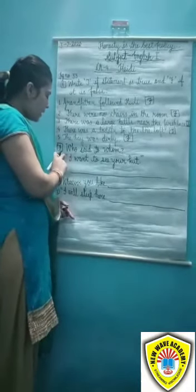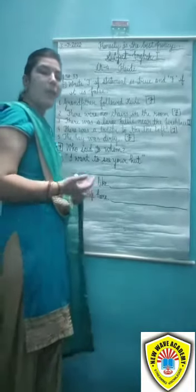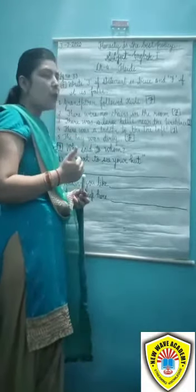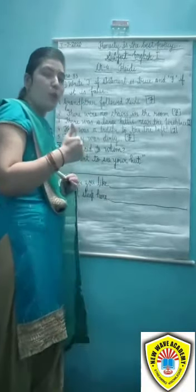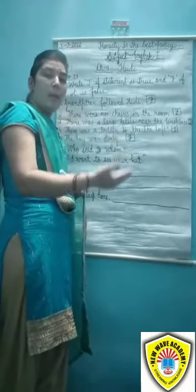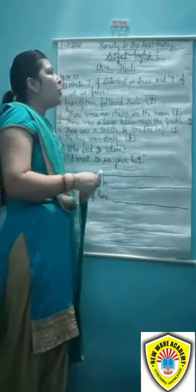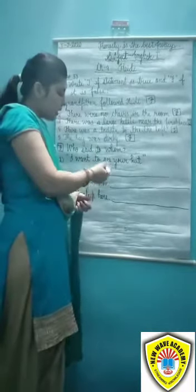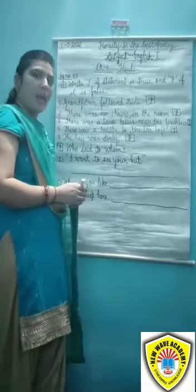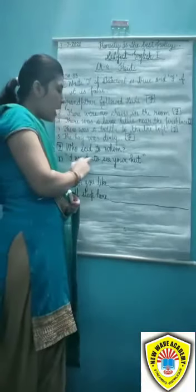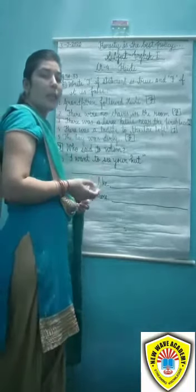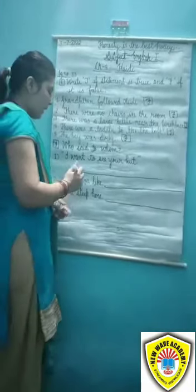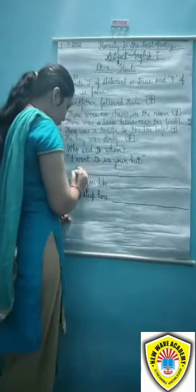Now we move on to the next exercise, that is section F: Who said to whom? In this exercise, we have some statements from the chapter and we need to identify who said each statement to whom. We have some conversations from chapter 4. The first statement is: I want to see your hut.